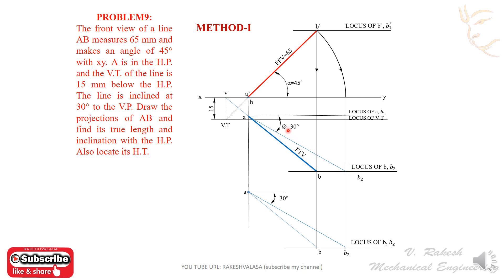The final top view line makes an angle beta. This is the true length — that is the initial top view line. Now rotate the final top view to the locus of a; this is the length of top view. This is the true length of the given line; this point is b1. Draw the projector from b1 to the locus of b'. This is b1'. Now join a'b1' — this is the initial front view, that means the true length. Measure a'b1' or ab2; it gives the true length of the line.